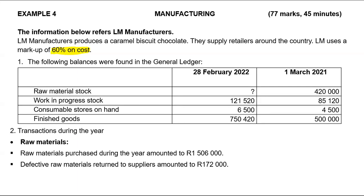You can easily tell that the 1st of March 2021 is the beginning of the financial year, and all those balances given on the 1st of March 2021 will be opening balances — balances at the beginning of the year. The balances given on the 28th of February 2022 will be balances at the end of the year.